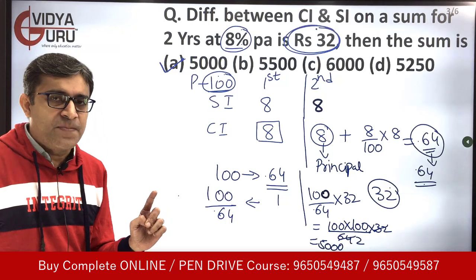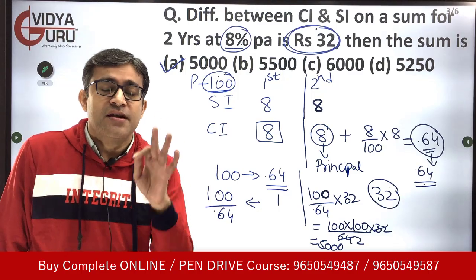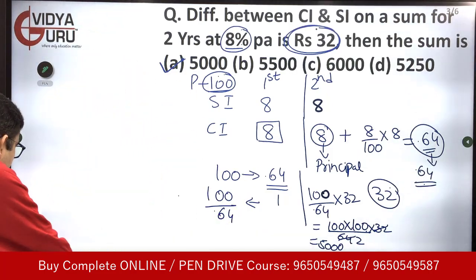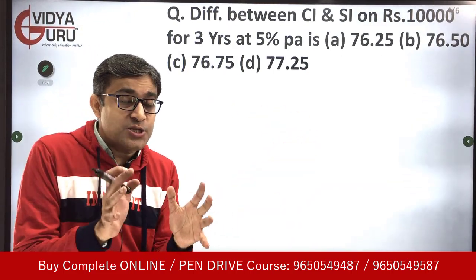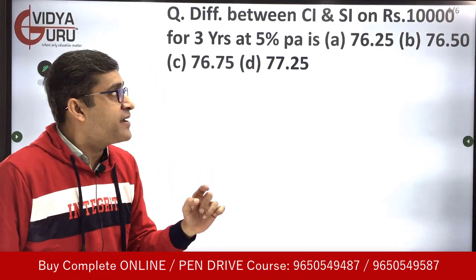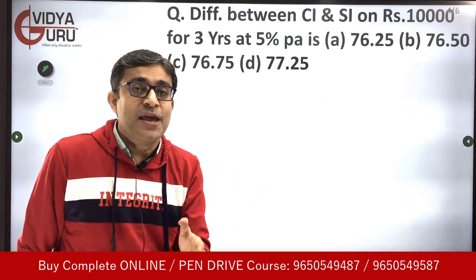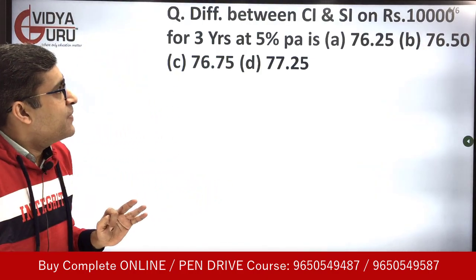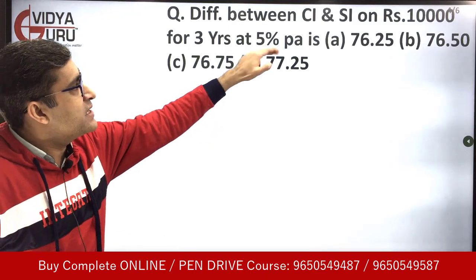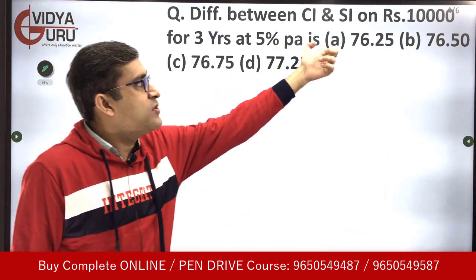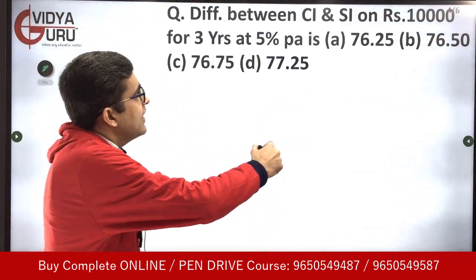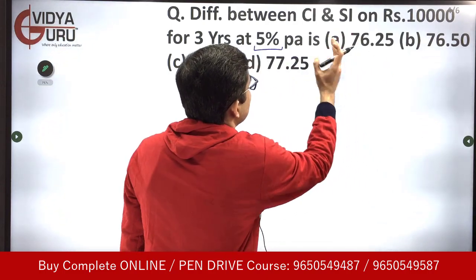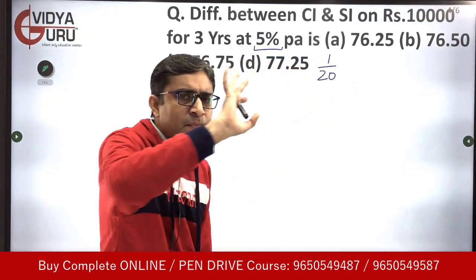Now what happens if the difference is of 3 years? If we have to calculate the difference for 3 years, now comes the interesting part — a challenging question. We have been given the sum of rupees 10,000, the rate is 5%, and the duration is 3 years. We have to find out the difference between compound interest and simple interest. 5% is 1/20, so 1/20 of 10,000 turns out to be 500.